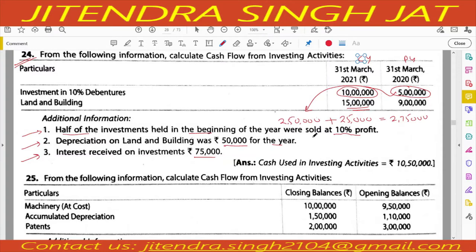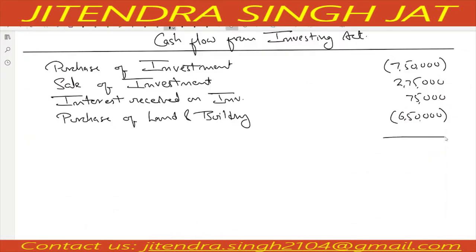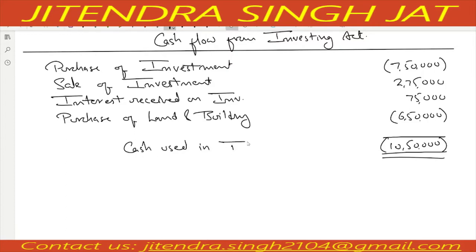All points are over. Total: 7 lakh 50,000 plus 6 lakh 50,000 minus 2 lakh 75,000 minus 75,000 equals 10 lakh 50,000 negative. Negative means cash used, so it is cash used in investing activity. I hope it is clear to everyone.